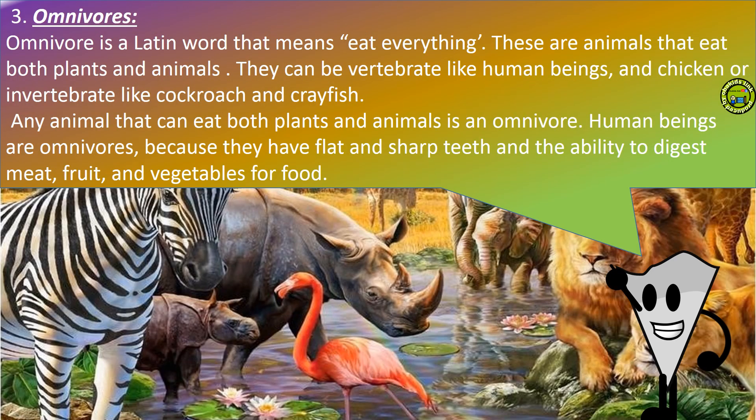Small carnivores can include spiders, frogs and bats. Medium-sized carnivores might include larger birds such as eagles, hawks and snakes. Large carnivores range from wild dogs and wolves to large predators like lions, tigers or crocodiles. Three, omnivores. Omnivore is a Latin word that means eat everything. These are animals that eat both plants and animals. They can be vertebrates like human beings and chicken, or invertebrates like cockroach and crayfish.